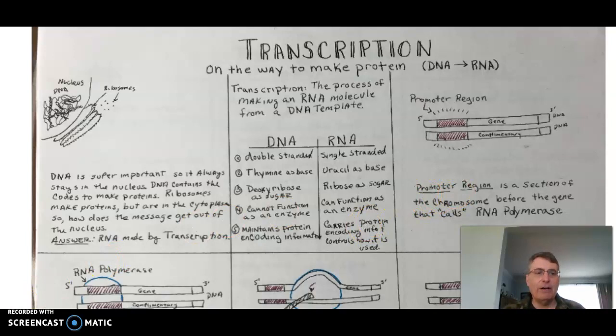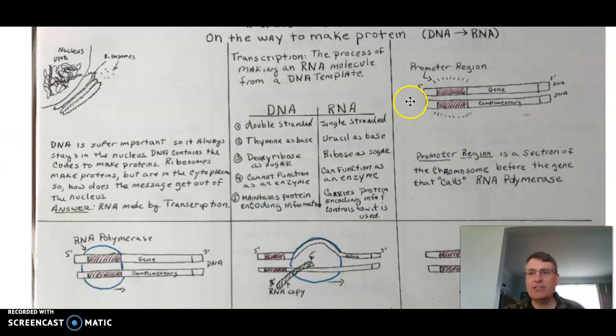Looking here at how this starts, we have our DNA molecule. We got the gene side here and the complementary strand here. We talked about making DNA last week, and now we're going to make RNA from it. We're really only utilizing this part of the DNA molecule.